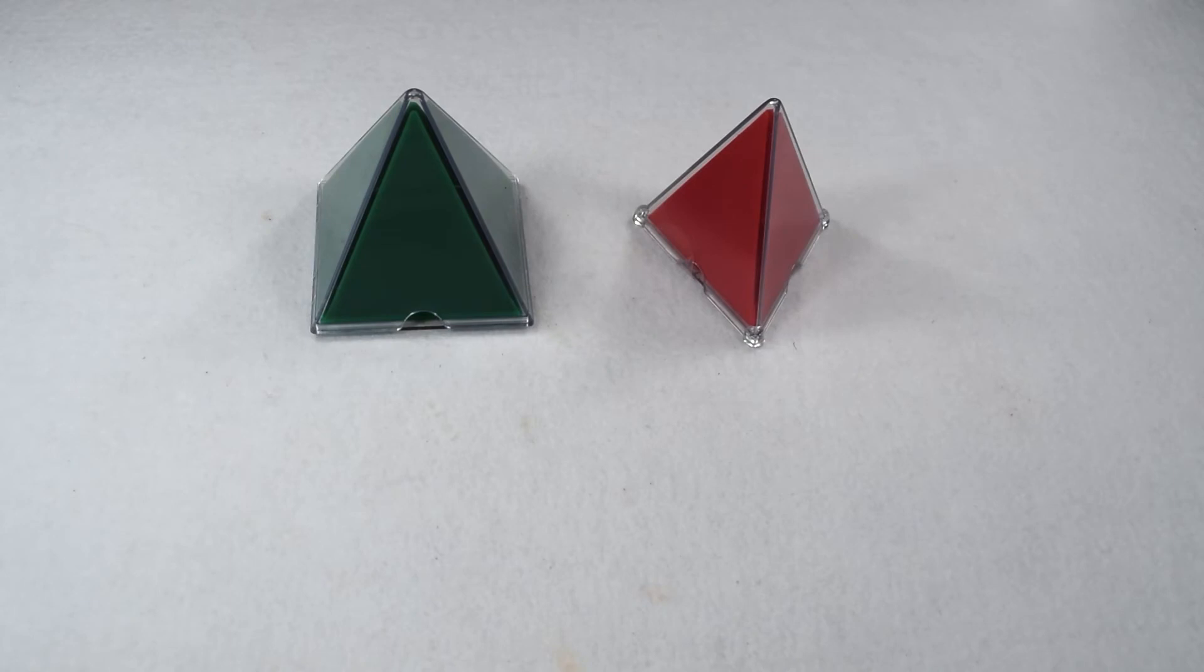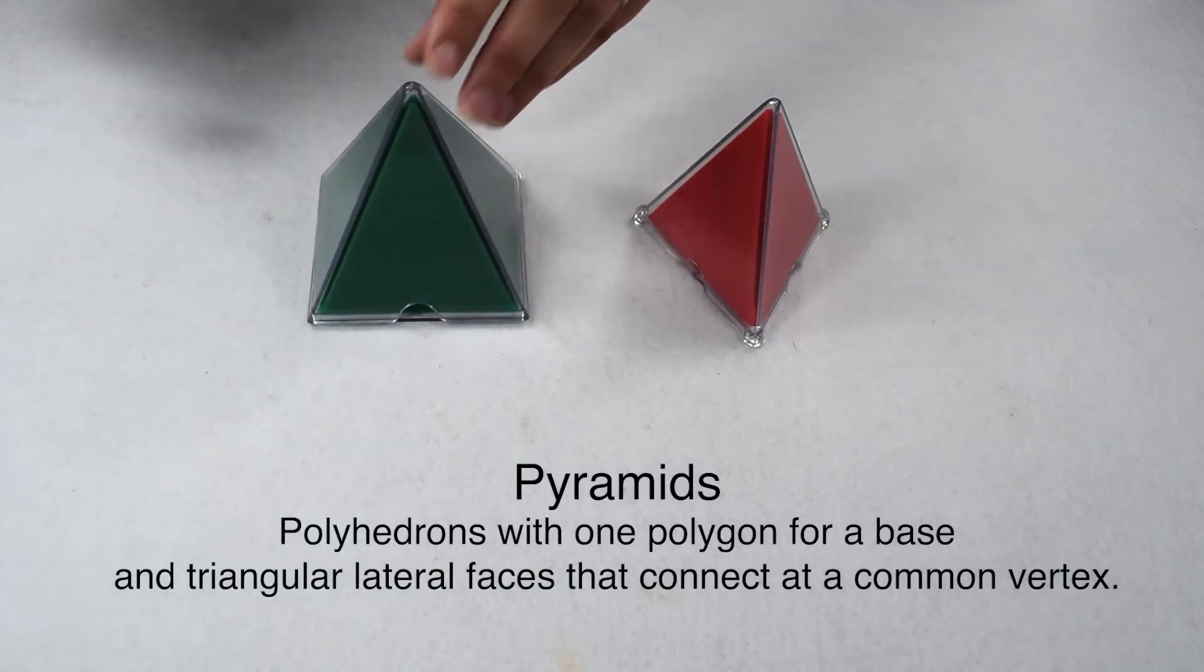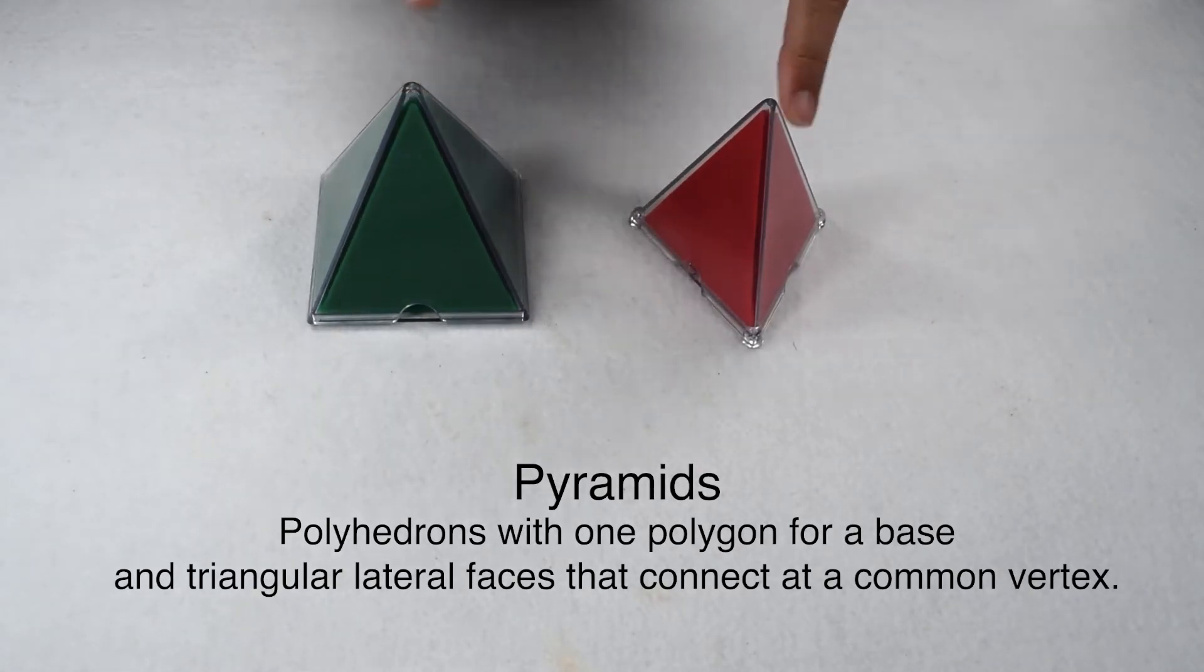Pyramids are another commonly used polyhedron. Pyramids are polyhedrons with one polygon for a base, and triangular lateral faces that connect at a common vertex, also called the apex.